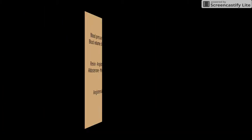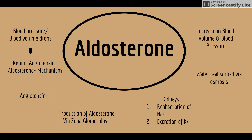How aldosterone normally works: the first stimulus is when your blood pressure or blood volume falls, triggering the renin-angiotensin-aldosterone mechanism, creating angiotensin 2, which triggers production of aldosterone via the zona glomerulosa of the adrenals. It targets the kidneys to reabsorb sodium and excrete potassium. Once water is reabsorbed by osmosis after sodium into the bloodstream, it increases blood volume and blood pressure, ending the cycle.